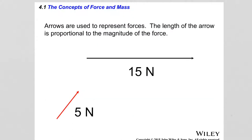Forces are vector quantities, and therefore a force would be graphically depicted by a straight line ending with an arrow, which indicates the direction, and then the magnitude of the force is listed as well. So we have two different forces here: a 15 N force and a 5 N force. The length of the arrow is the magnitude of the force; the arrow indicates direction.